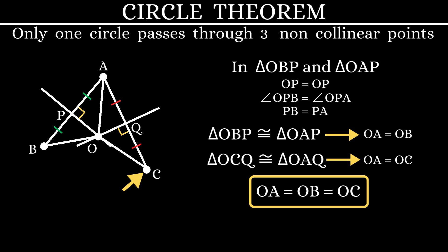So, O becomes the center and OA or OB or OC becomes the radius. Now, let's draw the circle.